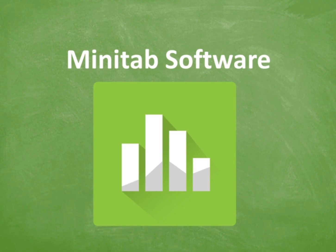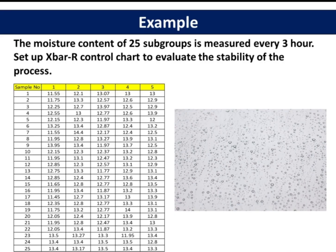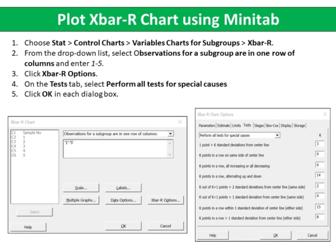Let's take a look at an example using Minitab. The moisture content of 25 subgroups is measured every 3 hours. Set up an X-bar R control chart to evaluate the stability of the process. Choose Stat, Control Charts, Variables Charts for Subgroups, X-bar R. From the drop-down list, select Observations for a subgroup in one row of columns and enter 1 to 5. Click X-bar R options. On the Tests tab, select Perform All Tests for Special Causes. Click OK in each dialog box.